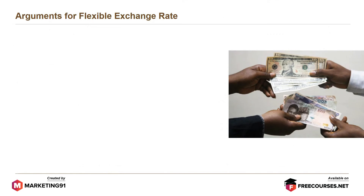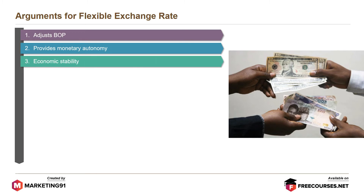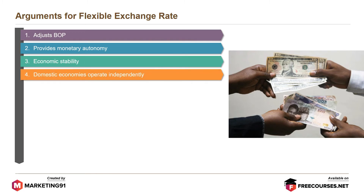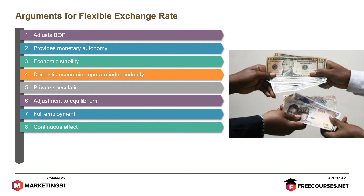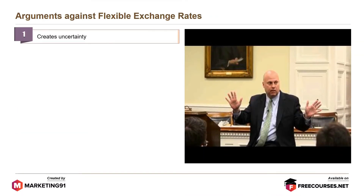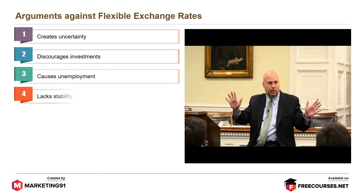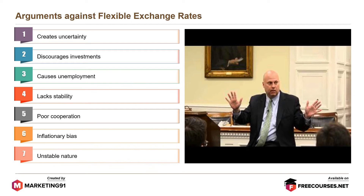Arguments for flexible exchange rates include: adjusts BOP, provides monetary autonomy, economic stability, domestic economies operate independently, private speculation, adjustment to equilibrium, full employment, continuous effect, natural level, and international liquidity. Arguments against flexible exchange rates include: creates uncertainty, discourages investments, causes unemployment, lacks stability, poor cooperation, inflationary bias, and unstable nature.